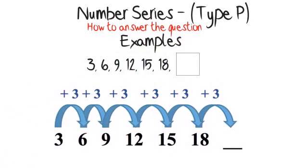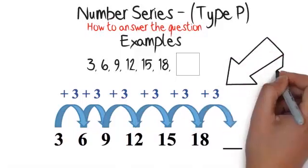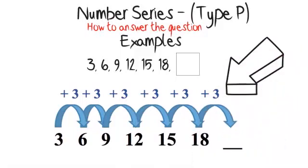To get from three to six you just need to add three. To get from six to nine you need to add three again. It seems like the rule is plus three. Go through the whole sequence of numbers and check that the rule of plus three works for each of the numbers.